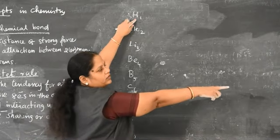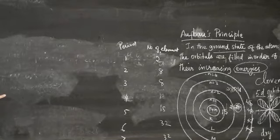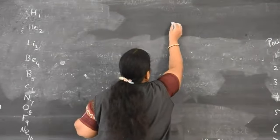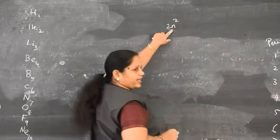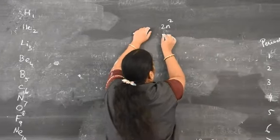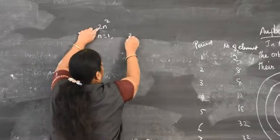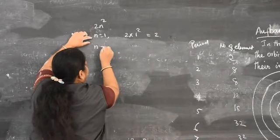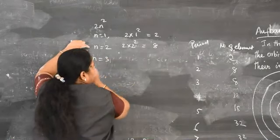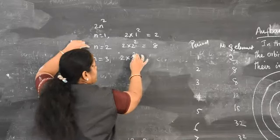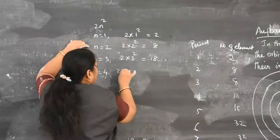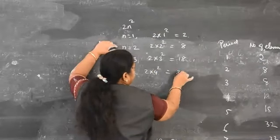The maximum number of electrons in a shell follows the formula 2n². For n=1: 2×1²=2. For n=2: 2×2²=8. For n=3: 2×3²=18. For n=4: 2×4²=32. This is the basic formula for filling electrons.